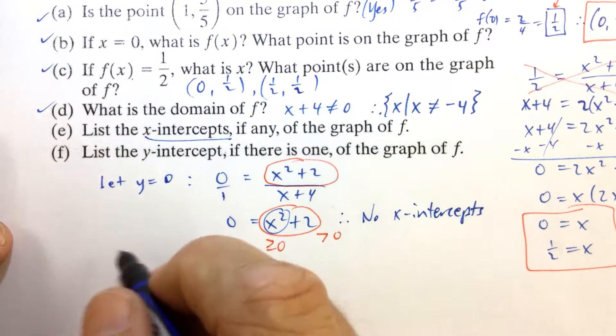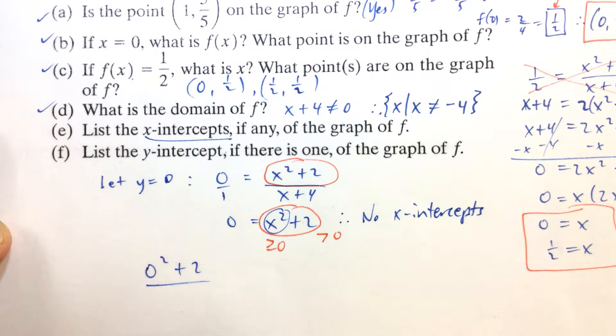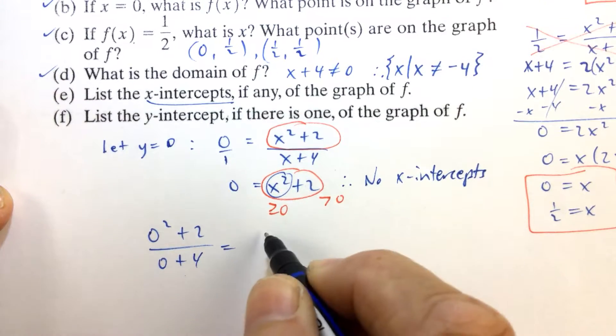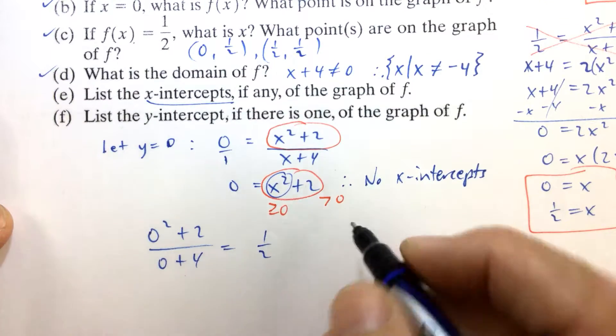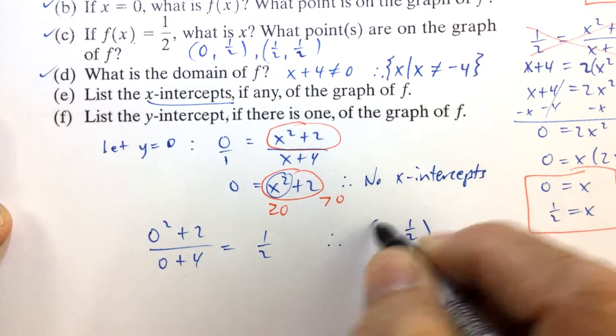And the Y-intercept, well, the Y-intercept, you just let X equal 0. So, you get 0 squared plus 2 over 0 plus 4. And we already said that that was 1 half. So, therefore, the Y-intercept is 0, 1 half.